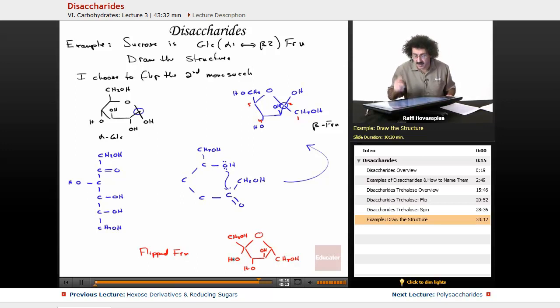The flipped fructose - this is down, so it's going to be up. This is CH2OH. This is up, it's going to be down. This is down, this is up. So now we have our carbons numbered differently now: one, two, three, four, five, and six.